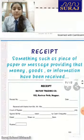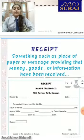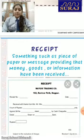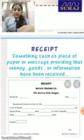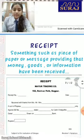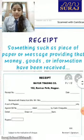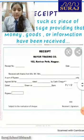Fourth: receipt. A receipt is something such as a piece of paper or message providing proof that money, goods, or information have been received. This is the format of receipt.